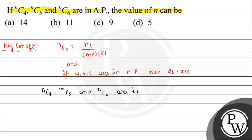Since NC4, NC5, and NC6 are in AP, we apply the AP condition: 2·NC5 equals NC4 plus NC6.